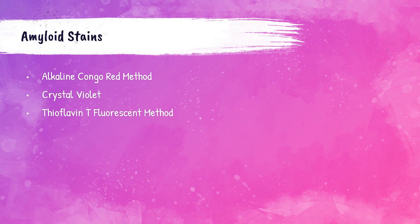There are three different stains used for the demonstration of amyloid within tissue sections: the alkaline Congo red method, crystal violet, and the thioflavin T fluorescent method. We're going to talk about all three of those now.